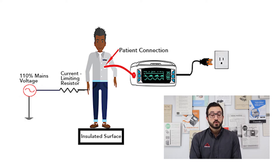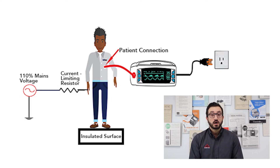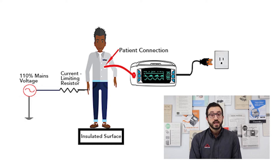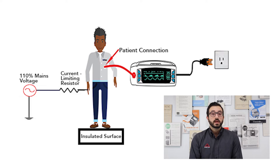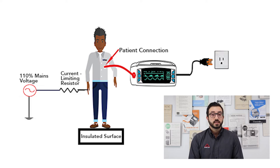In other words, applied parts that may come in direct conductive contact with the patient's heart or other applications as considered necessary. During the test, leakage current of each applied part is measured while applying 110% of mains rated voltage through a current limiting resistor.